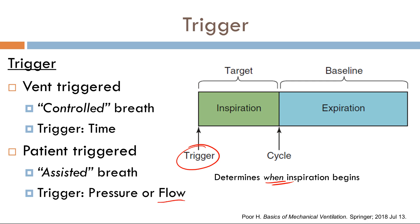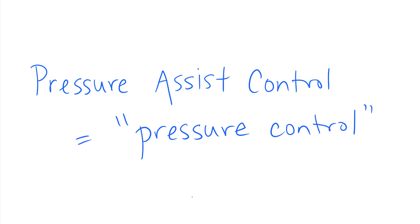For controlled breaths, the time between each delivered breath is determined by the respiratory rate. For assisted breaths, you have to plug in a numerical value for pressure or flow. For example, if the flow threshold is set to three liters per minute, that means if the patient initiates a breath and it surpasses the threshold of three liters per minute, then that breath is delivered.